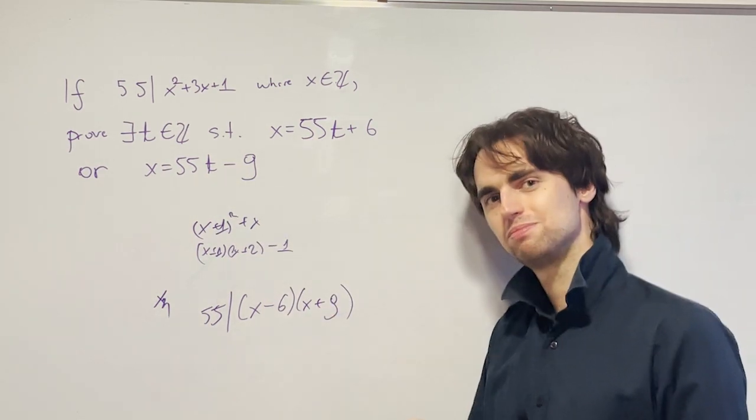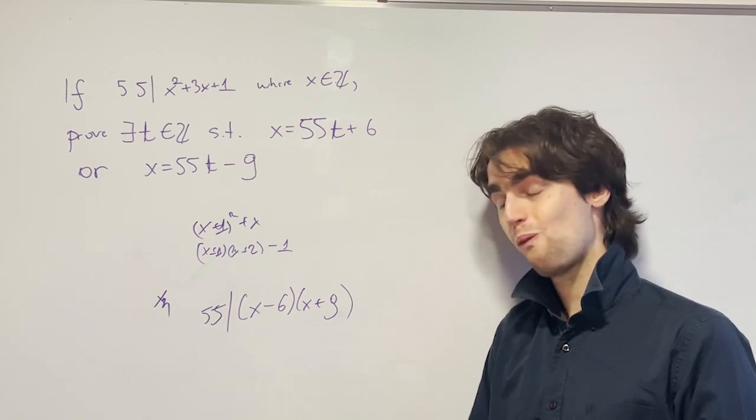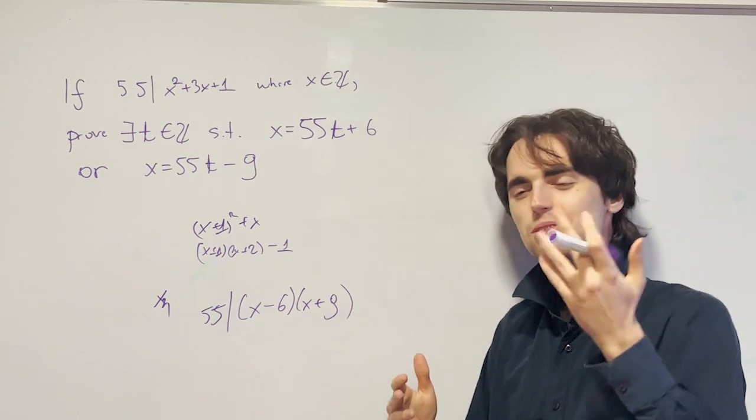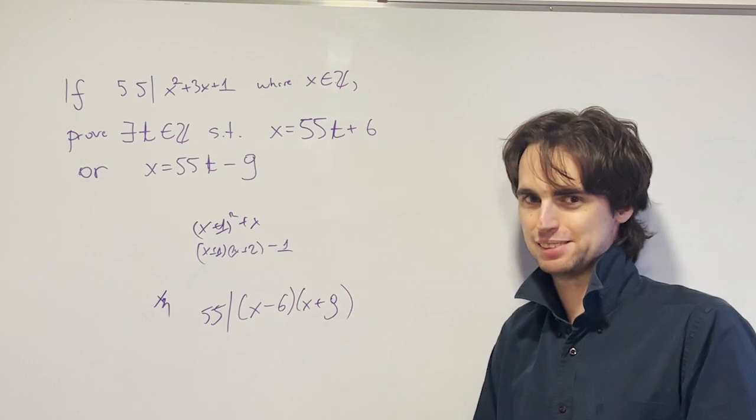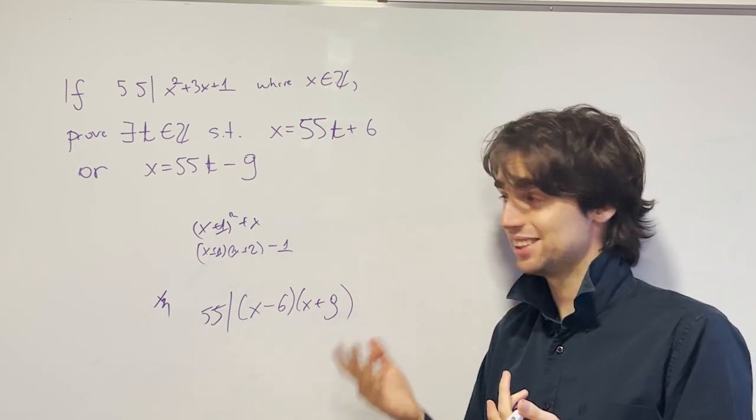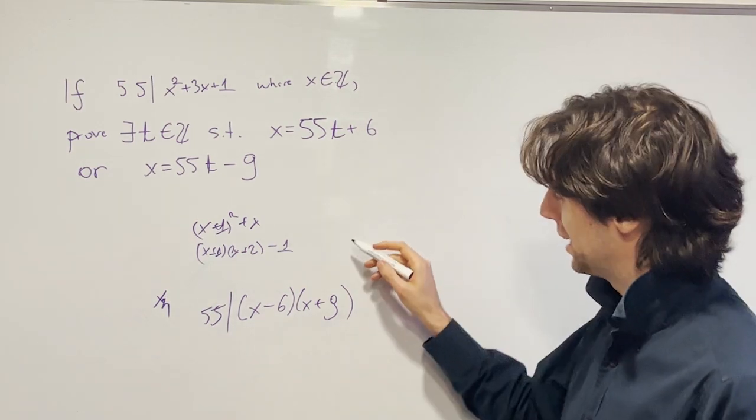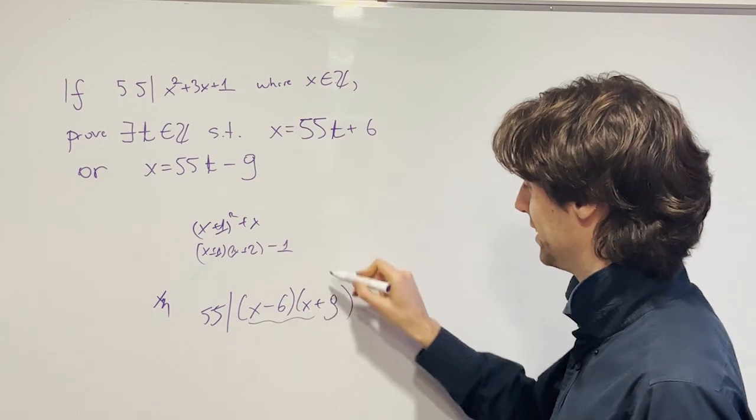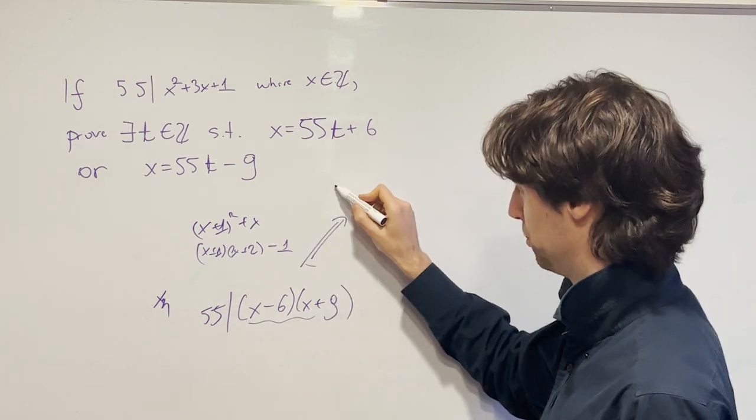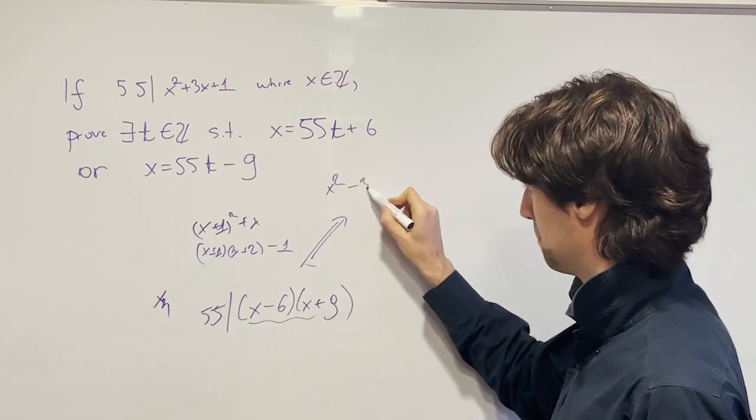Do we have this? I invite you to pause another two minutes and figure out if we already have this. And the answer is, we do. We have it because this thing right here is actually equal to x squared plus 3x.